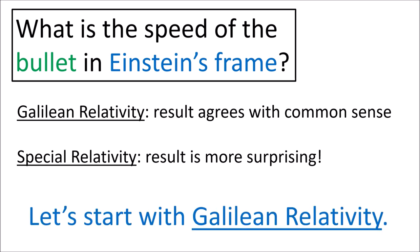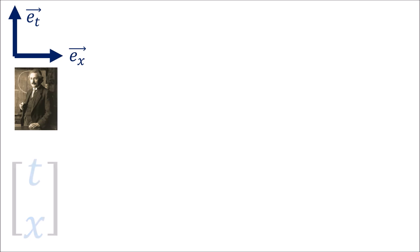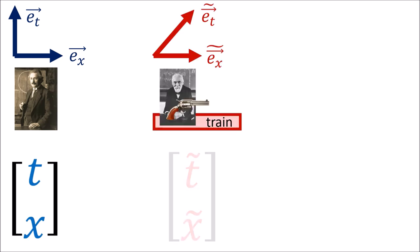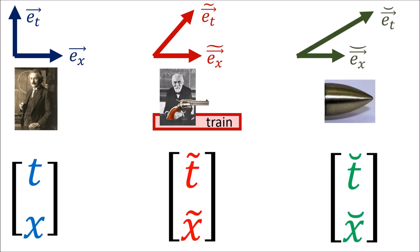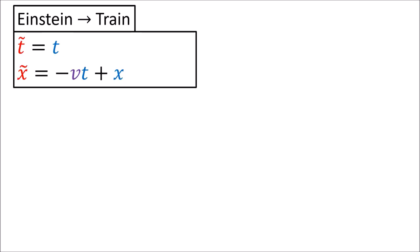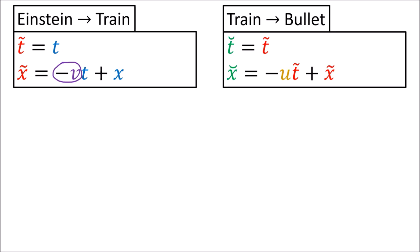Let's start by looking at the problem in Galilean relativity. Einstein uses spacetime coordinates t and x, the train uses coordinates t-tilde and x-tilde, and the bullet uses coordinates t-smile and x-smile. The Galilean transformation from Einstein to the train changes t and x into t-tilde and x-tilde using velocity v — the velocity of the train according to Einstein. The Galilean transformation from the train to the bullet changes t-tilde and x-tilde into t-smile and x-smile using velocity u — the velocity of the bullet according to the train.